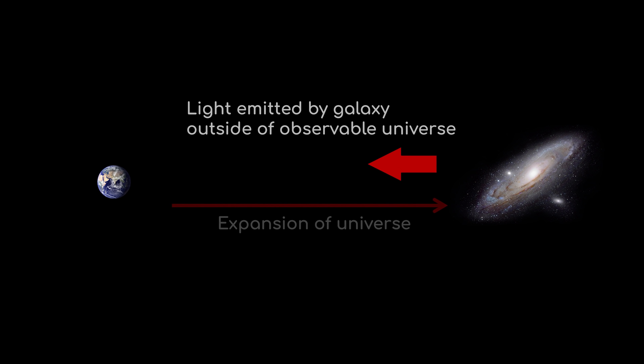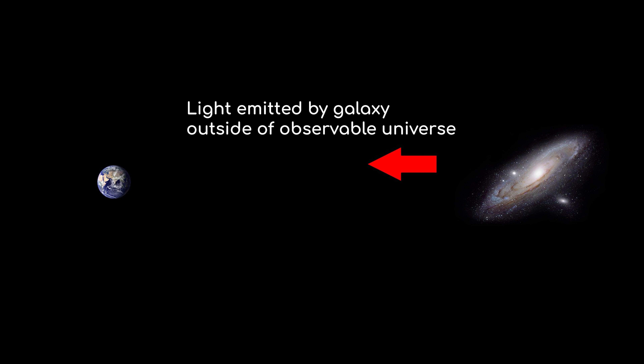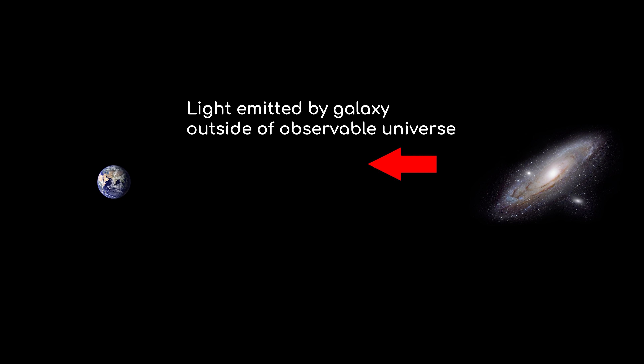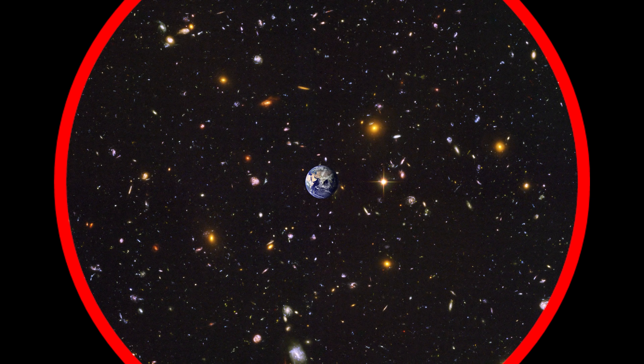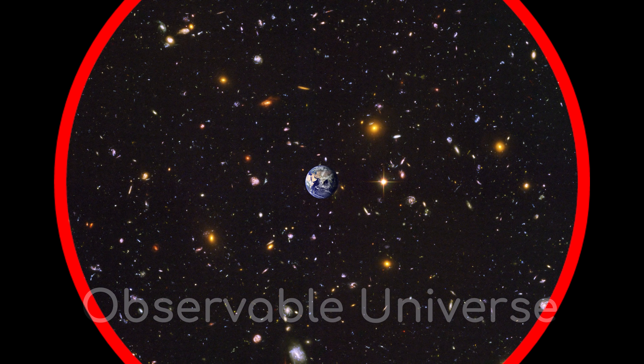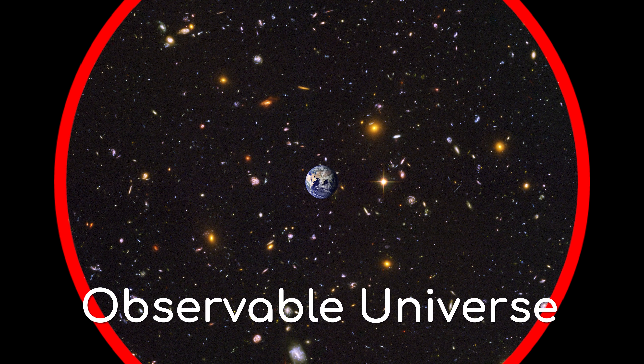Galaxies beyond that sphere are moving away from us faster than the speed of light, meaning that even with a telescope capable of infinite magnification, there would be patches of space in our sky that contain nothing at all from our perspective.